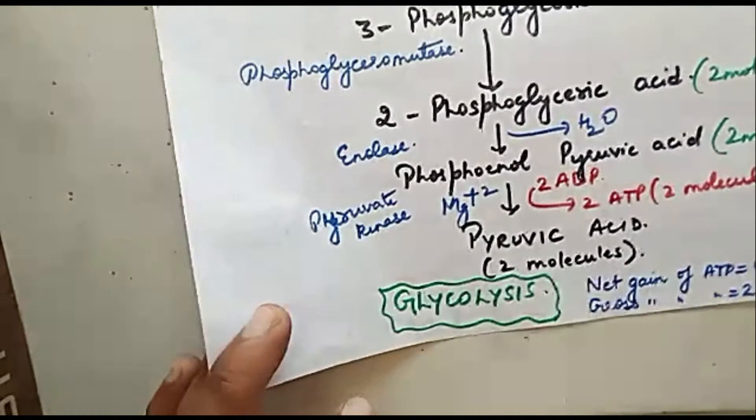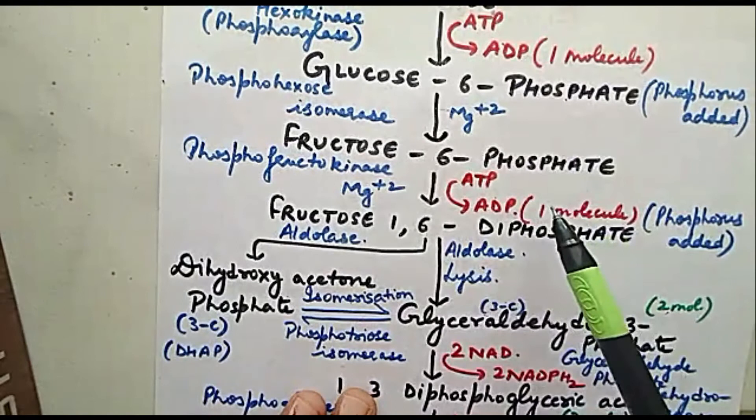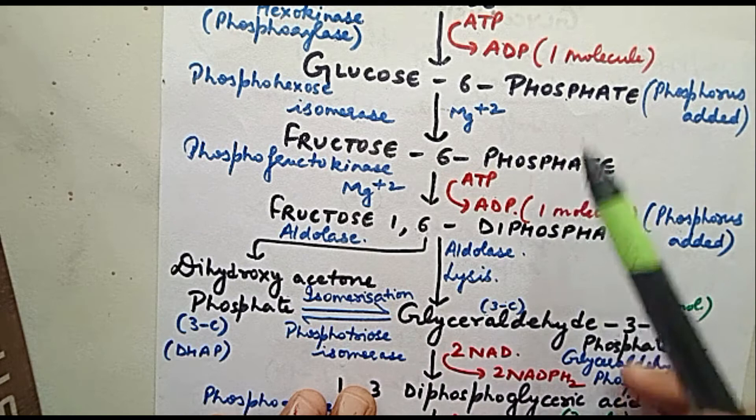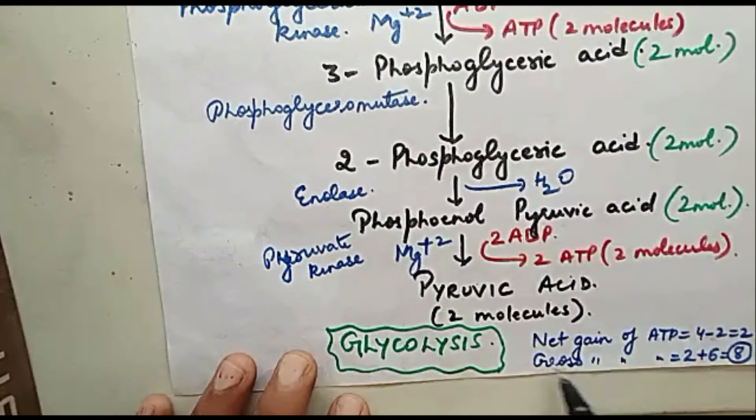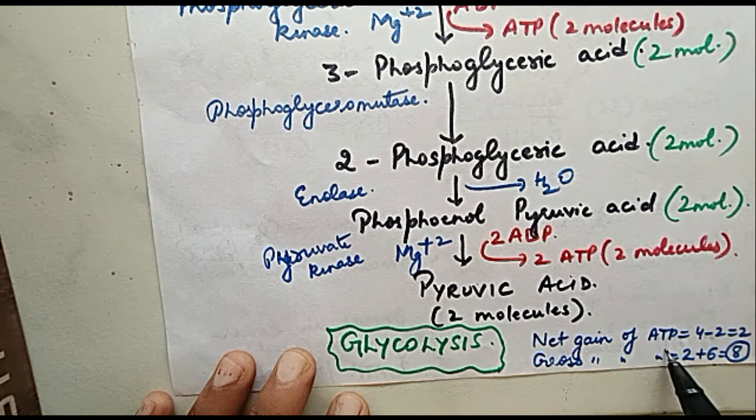It became 2 ATP here and 2 ATP here, which is 2 plus 2 equals 4. From that 4, we subtract 1 molecule used at the beginning steps, meaning 4 minus 2 equals 2. So during glycolysis, the net gain of ATP is 4 minus 2 equals 2. But we also see that gross gain of ATP will be different.